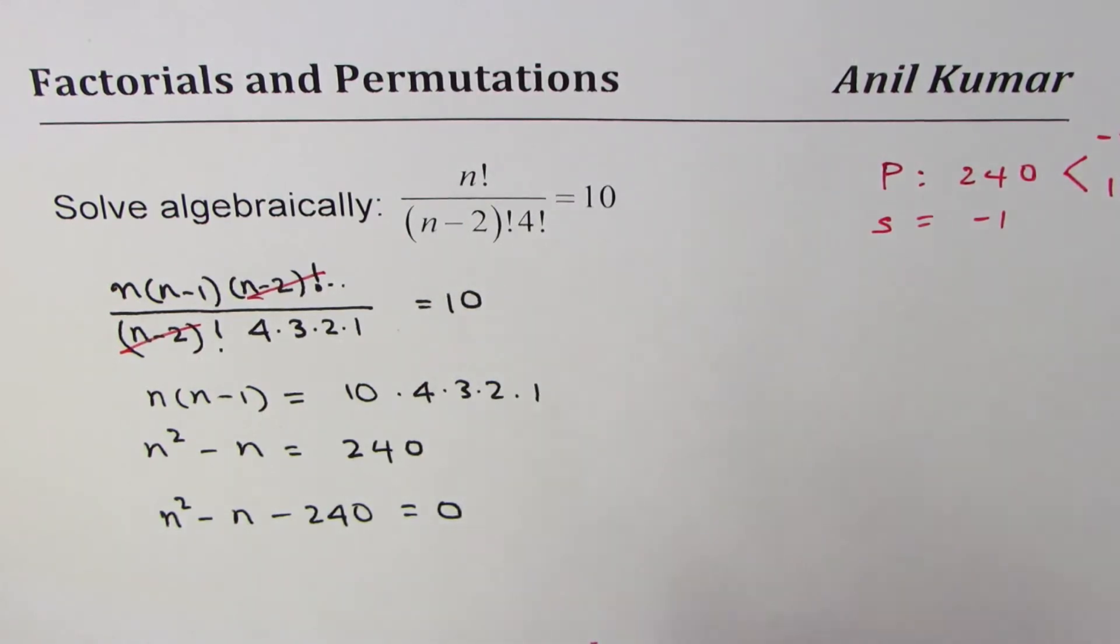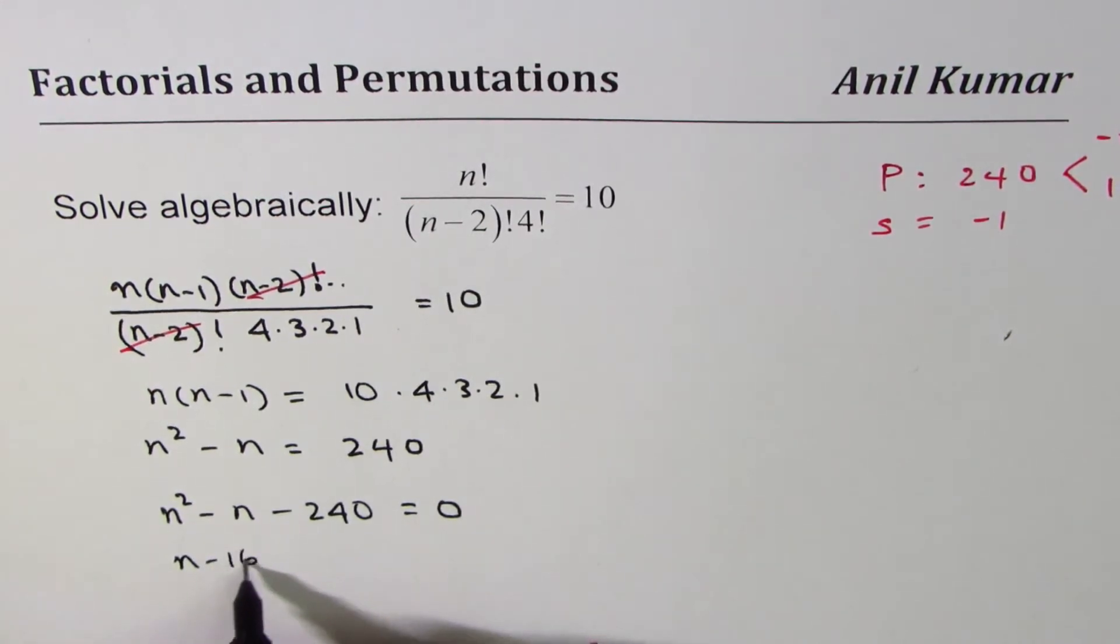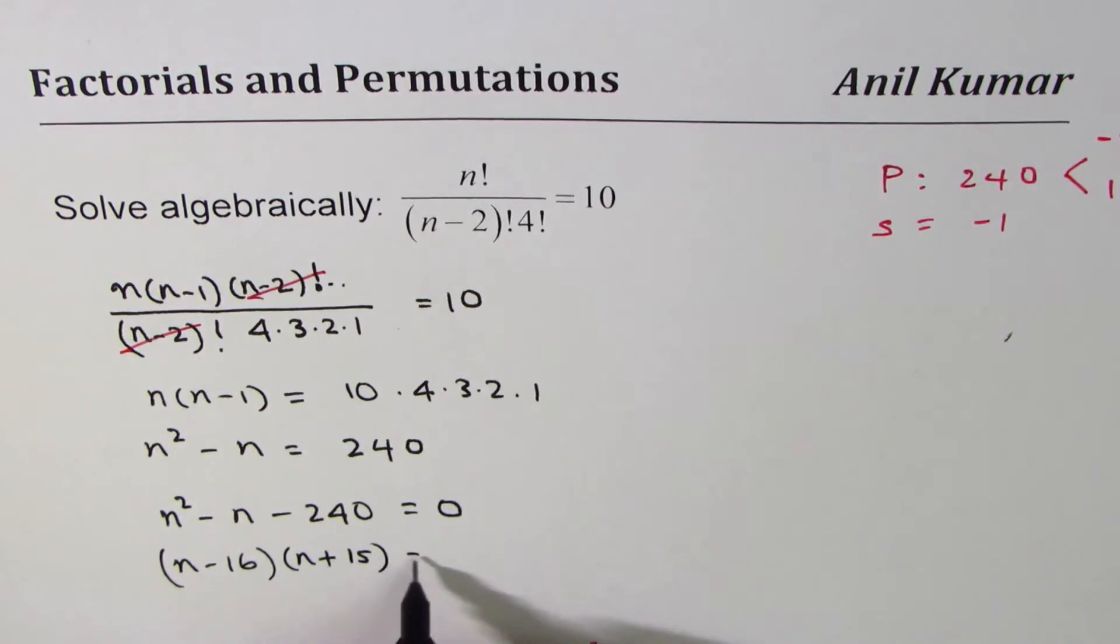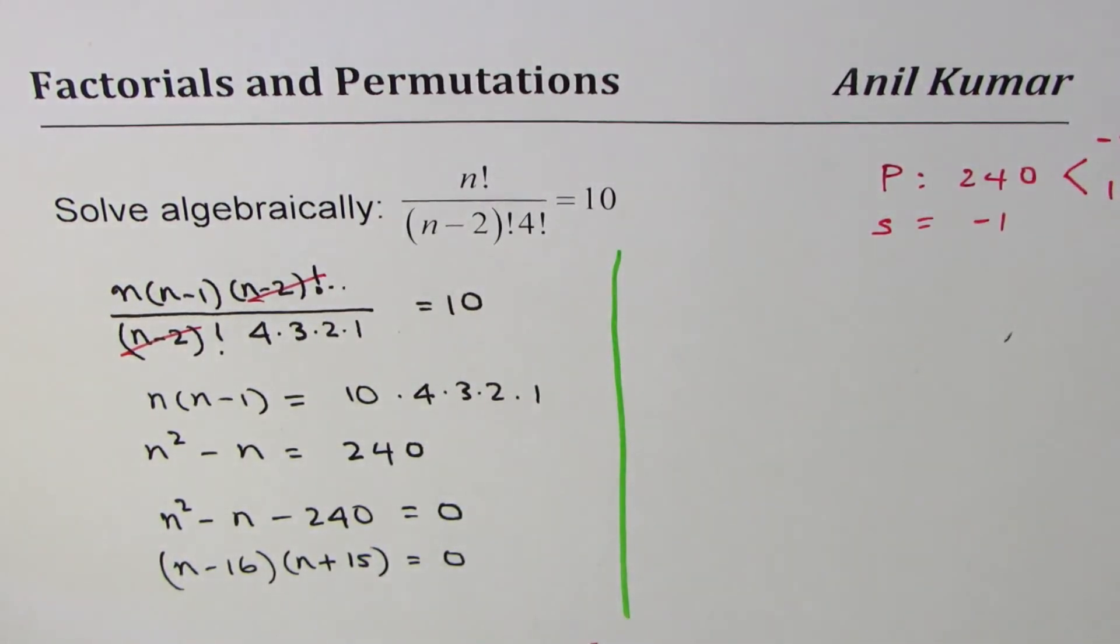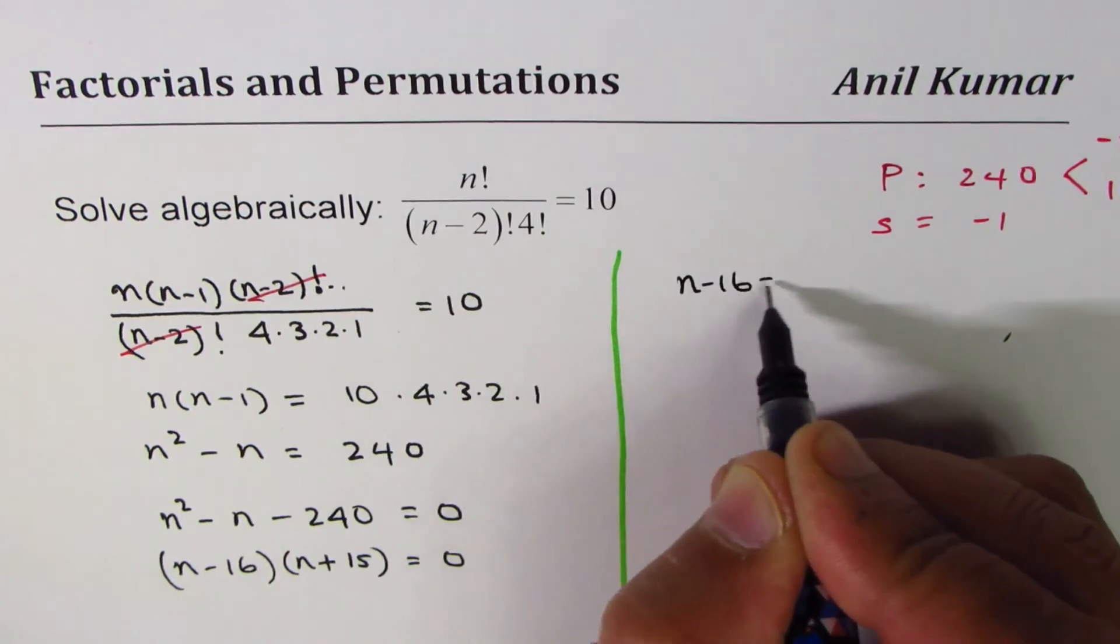So let's use these numbers and we can write this as (n minus 16) times (n plus 15) equal to 0. Now we have factored form of the quadratic equation.